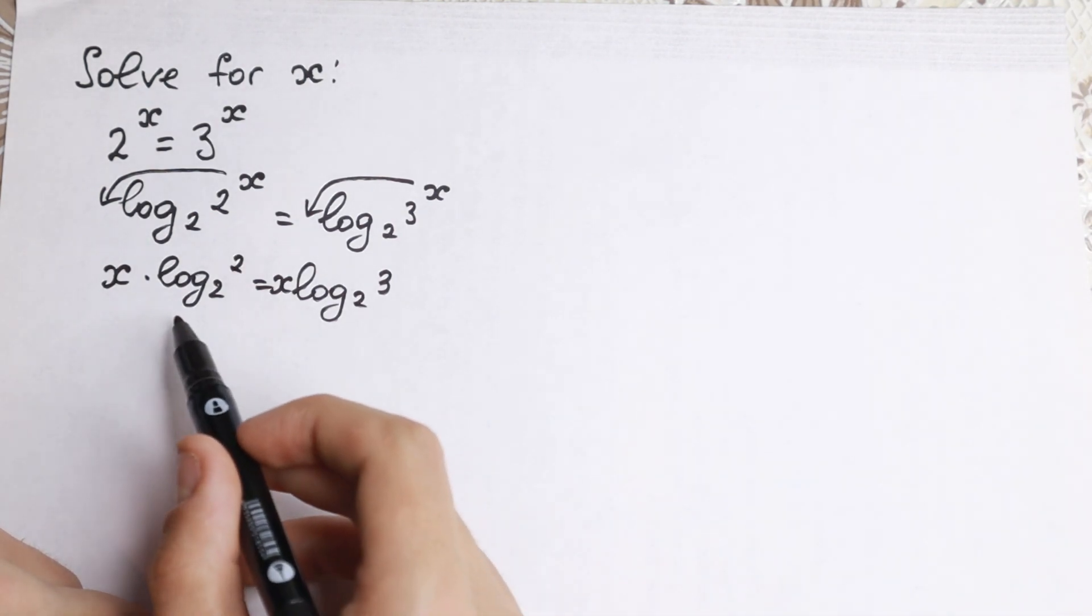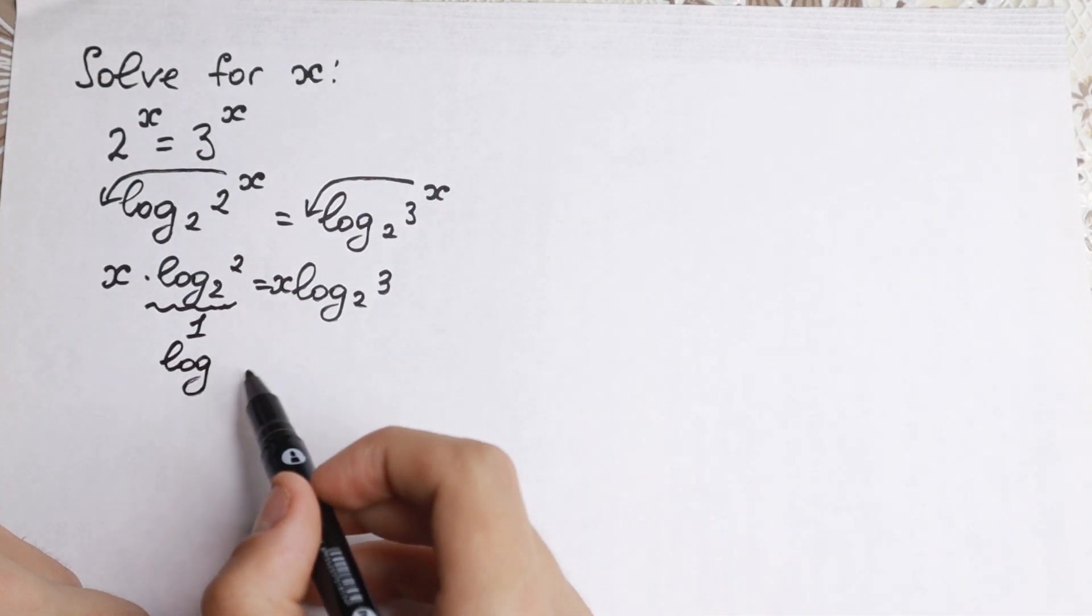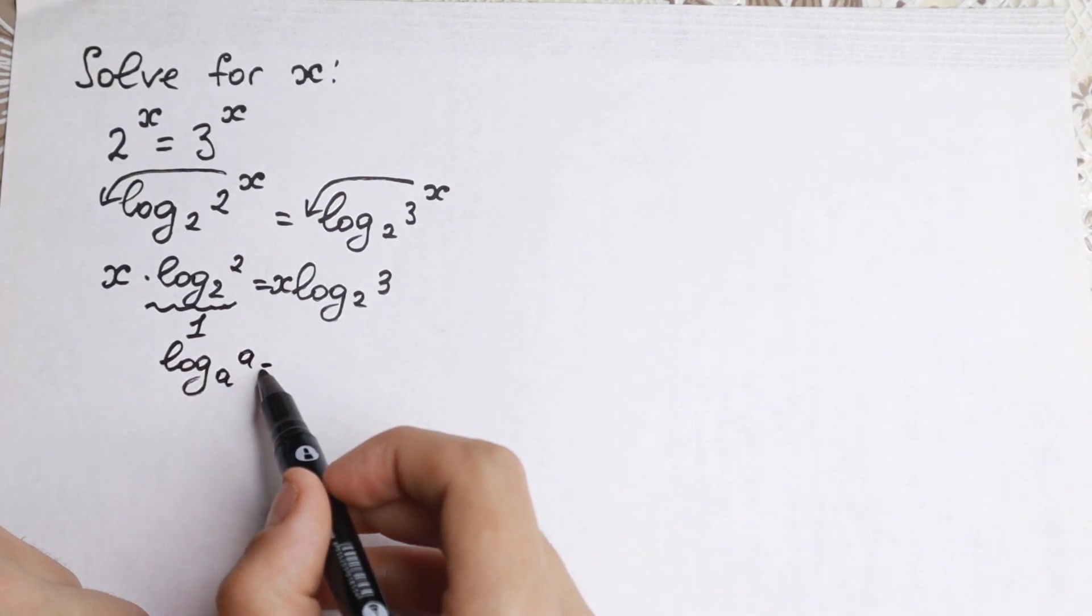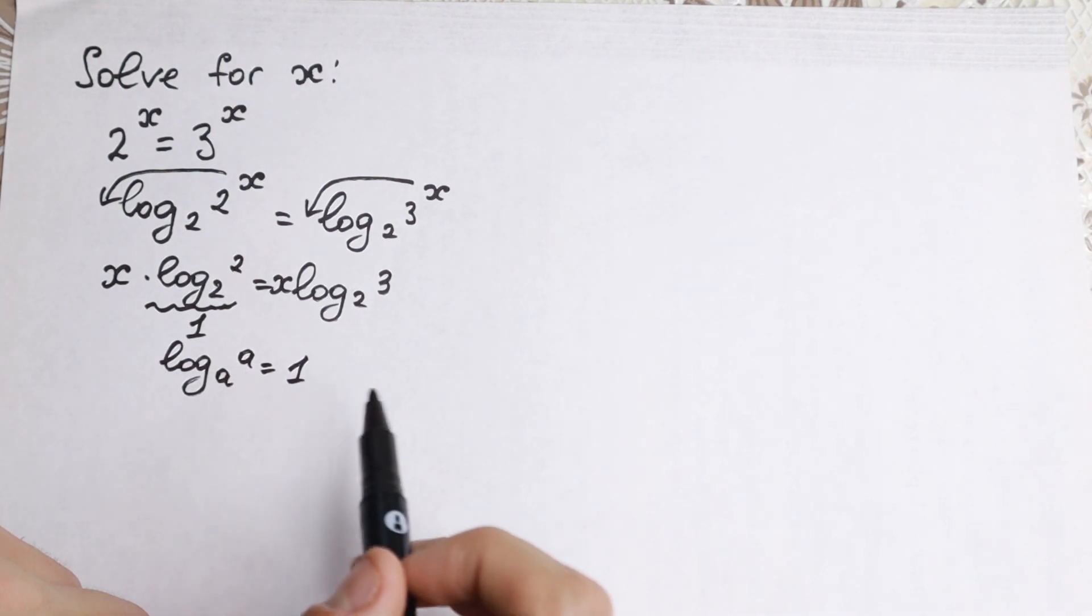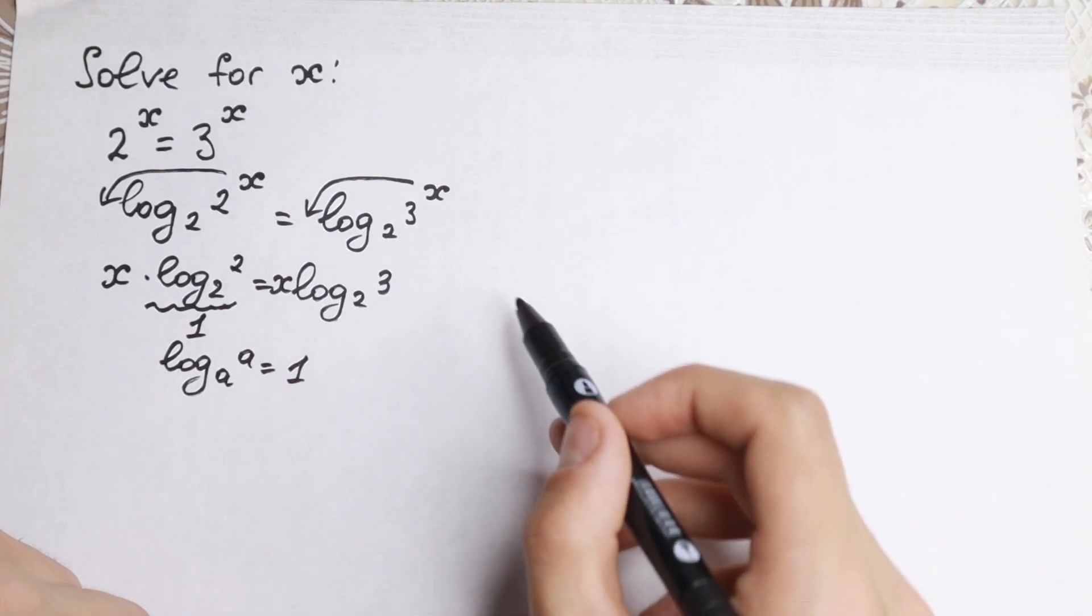Right now it's really good because log₂(2) equals 1. This is like log base a of a equals 1. Doesn't matter if these numbers are both the same, we'll have 1 on the right hand side. What do you have as a result?